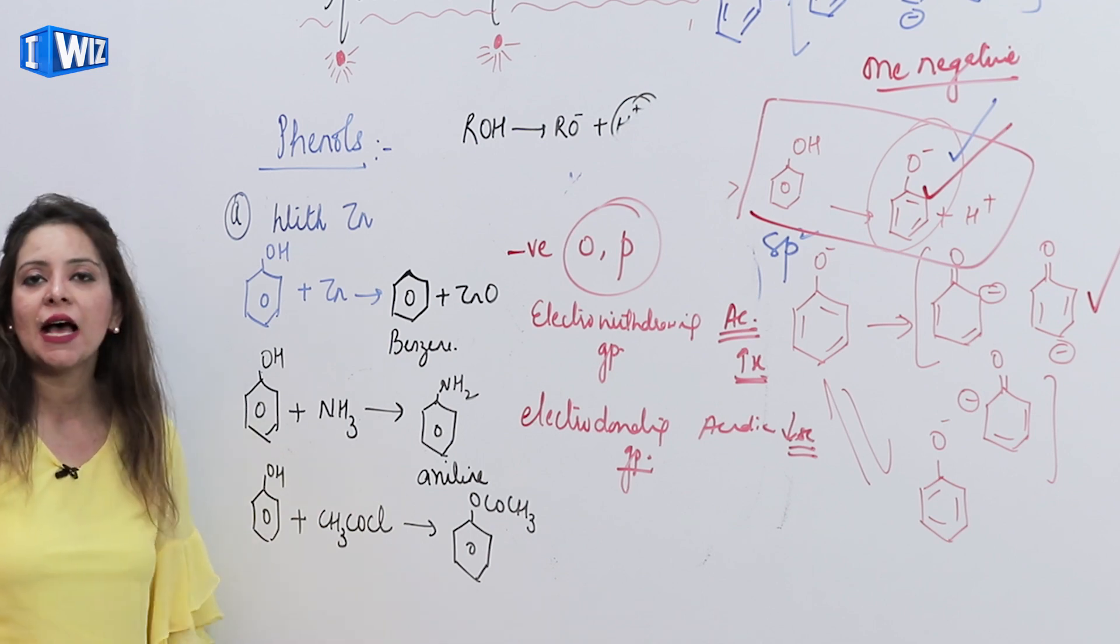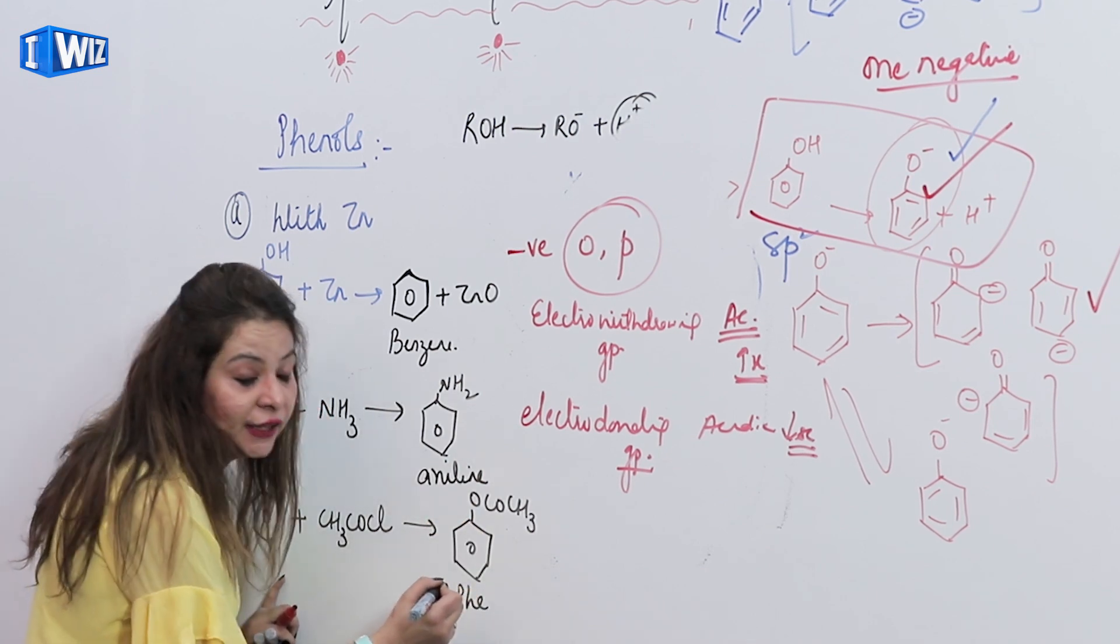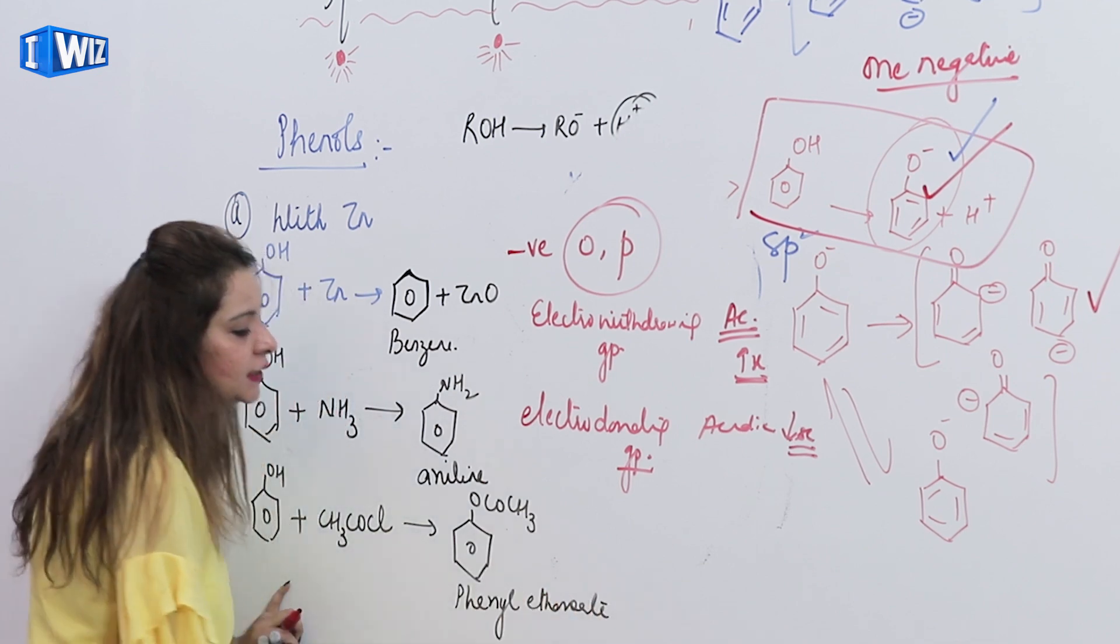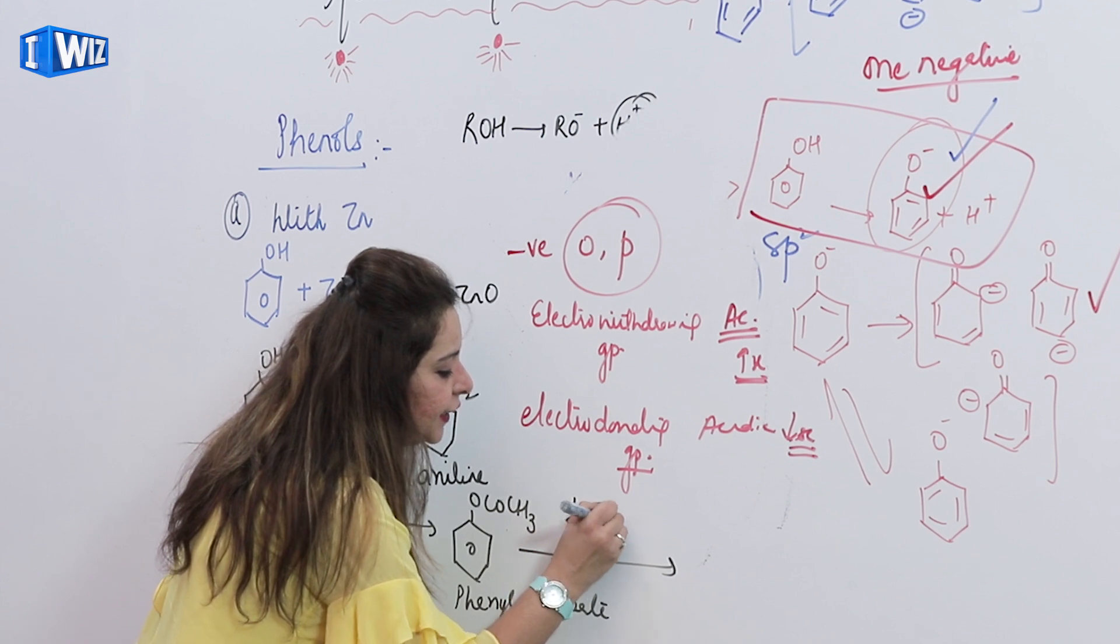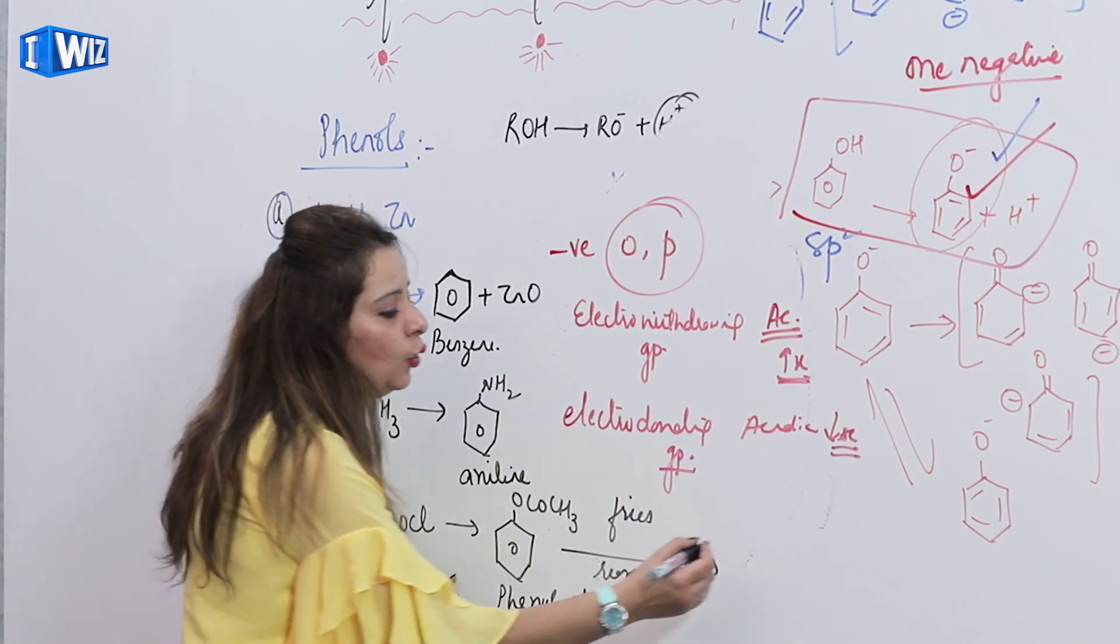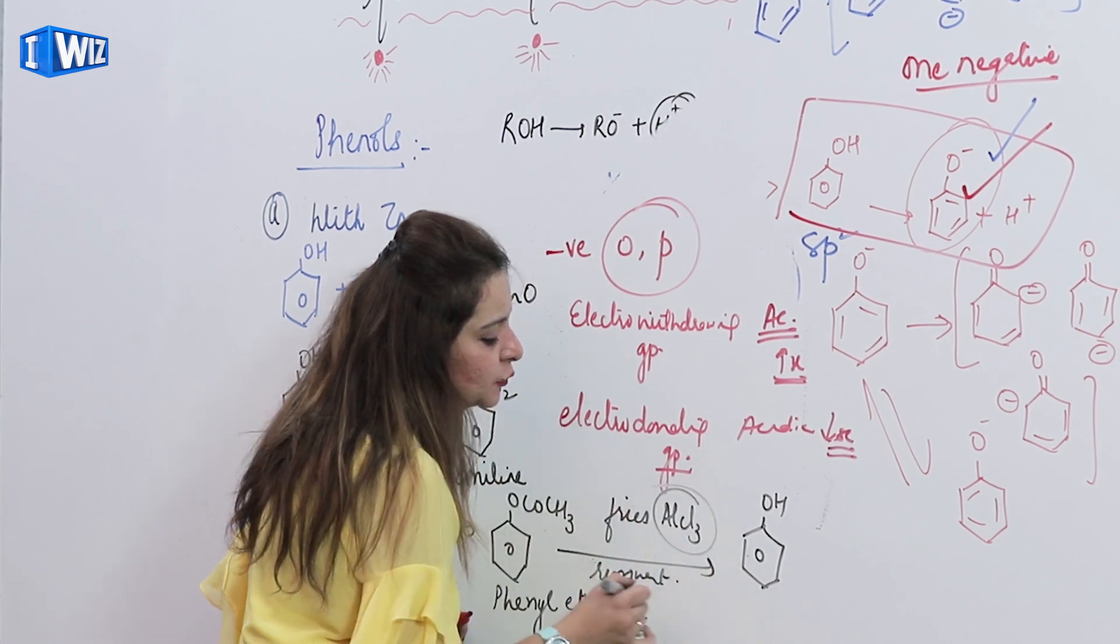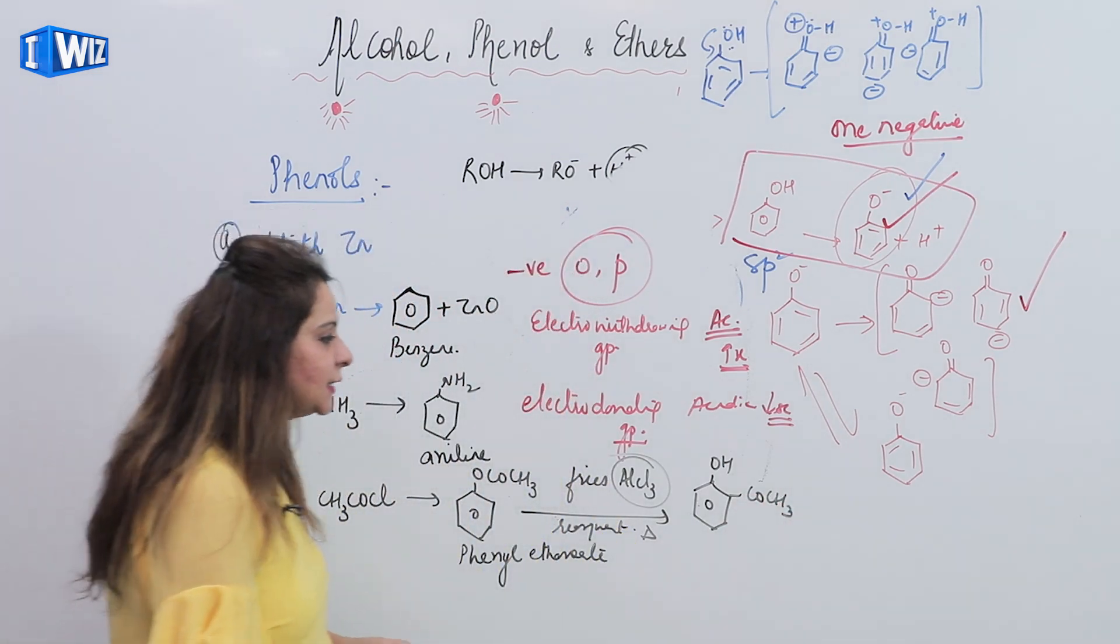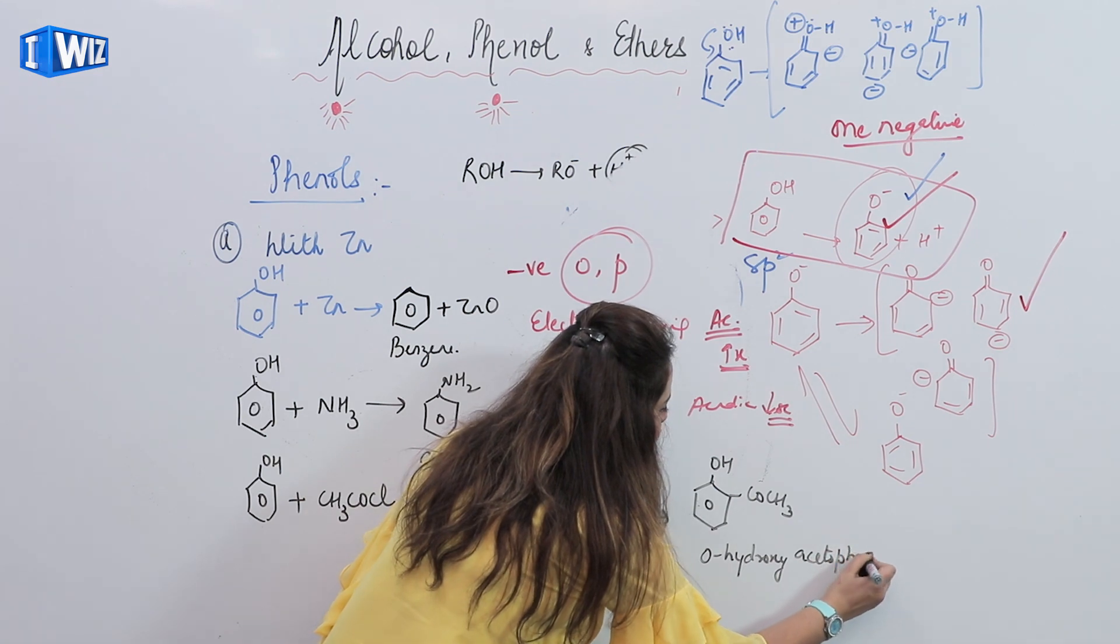If I do Friedel Craft acylation - what is acylation? Adding acyl group. Here H is going to be substituted by acyl group. So here I take CH3COCl. What product will we get? Phenoxide ion is going to react with this and we will get this as main product. What's its name? You can see two OR groups, so this is an ester. Its name is phenyl ethanoate.